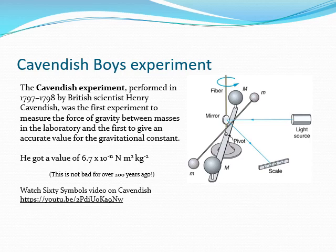There is a mirror on this bar with a light shining at it so you can measure the angle through which it has twisted. A light is shone onto the mirror, which then shines onto a scale, and as it twists the light moves along the scale. Through careful experimentation, measuring the masses and measuring how much it changed, Cavendish was able to work out a value of big G.